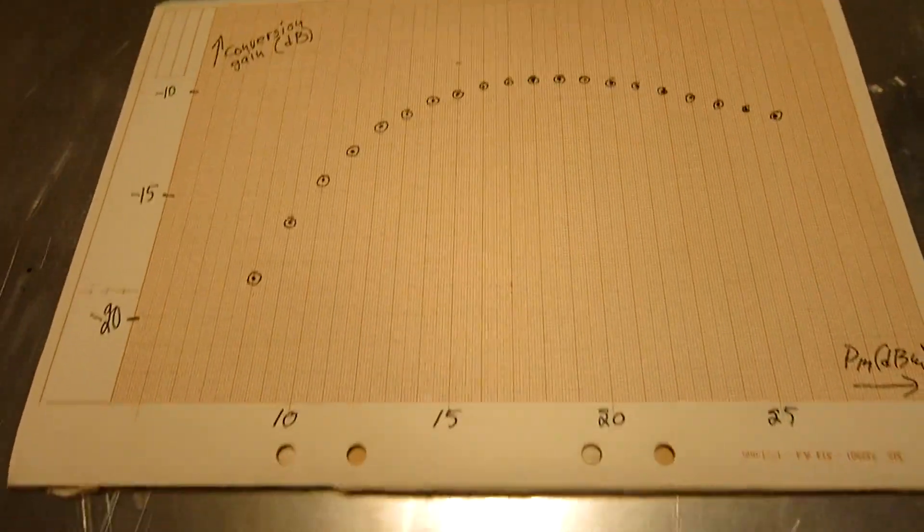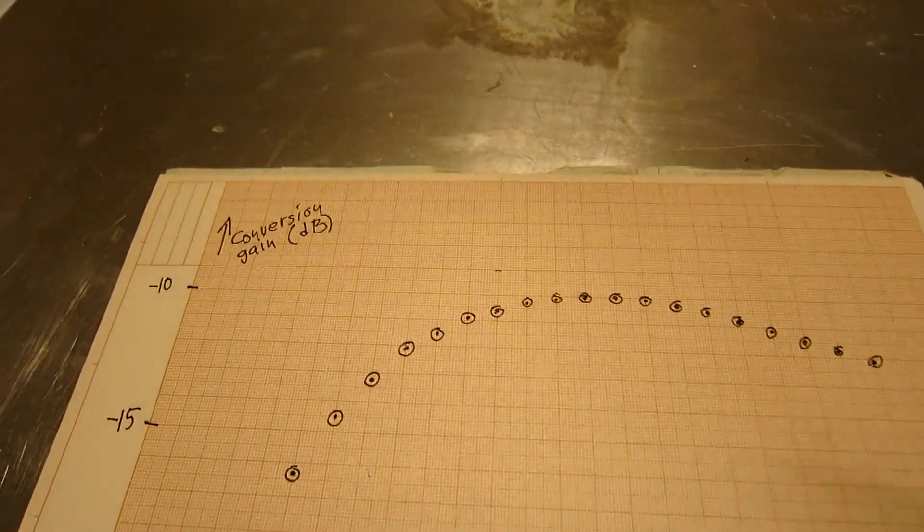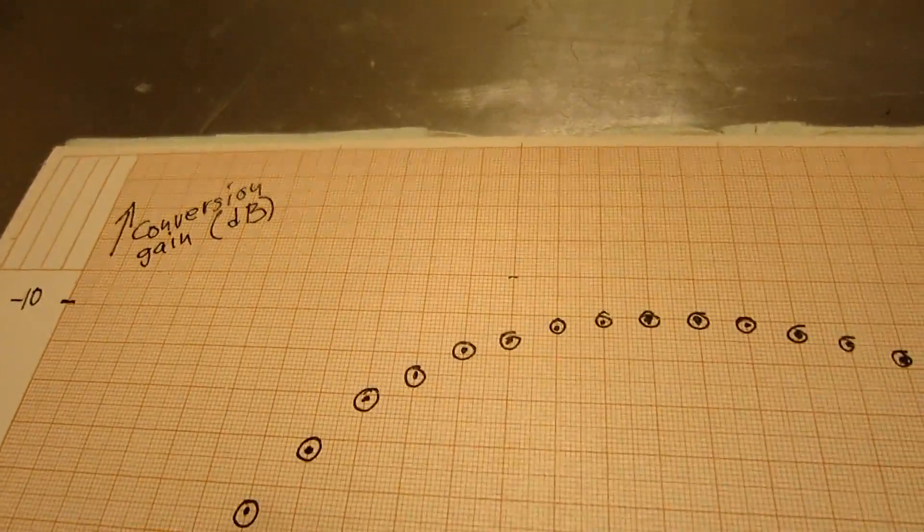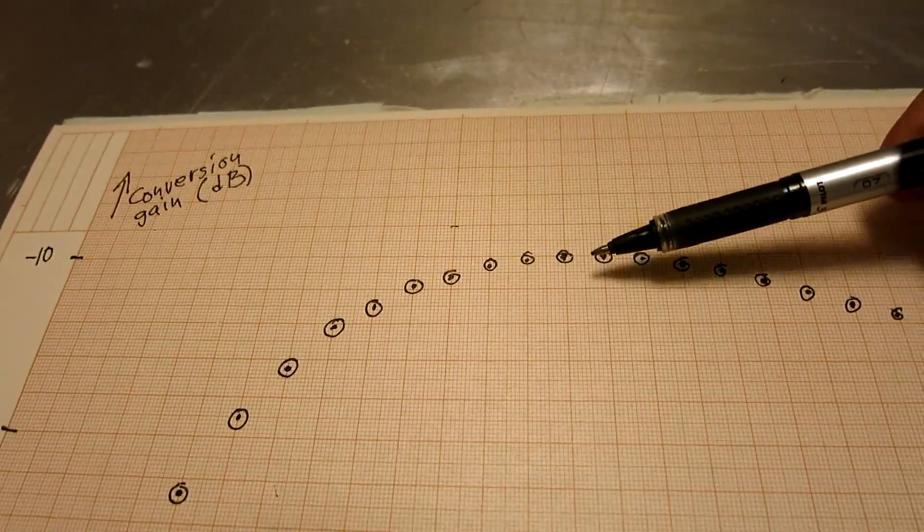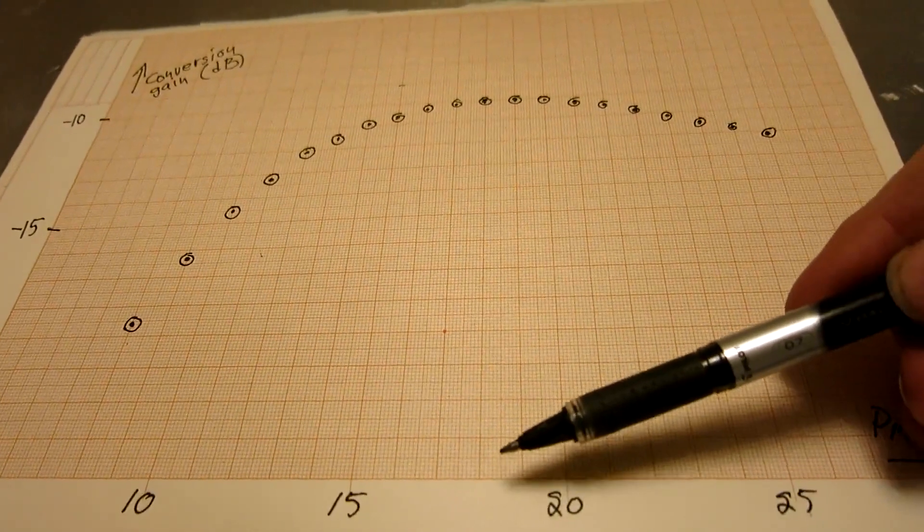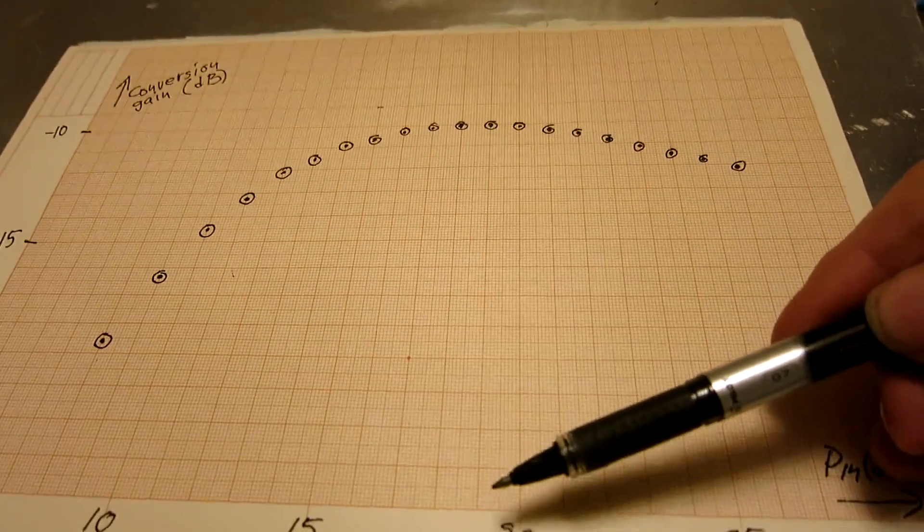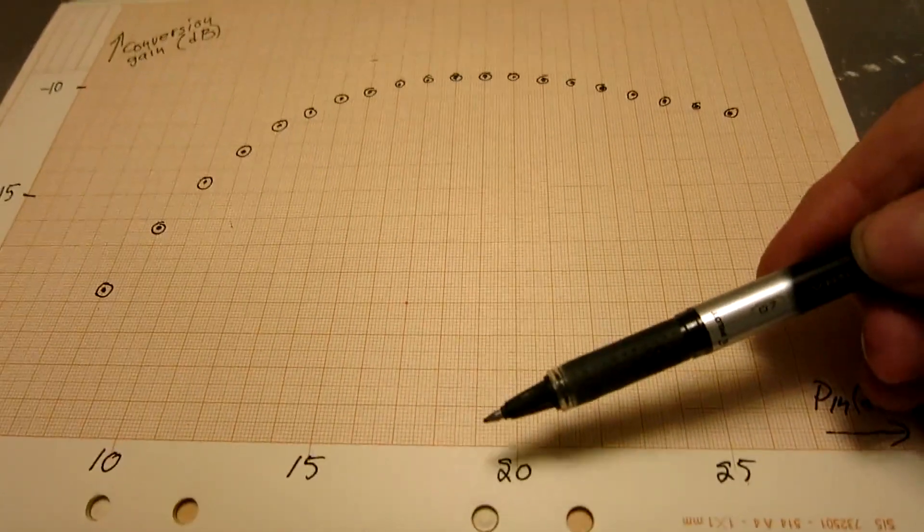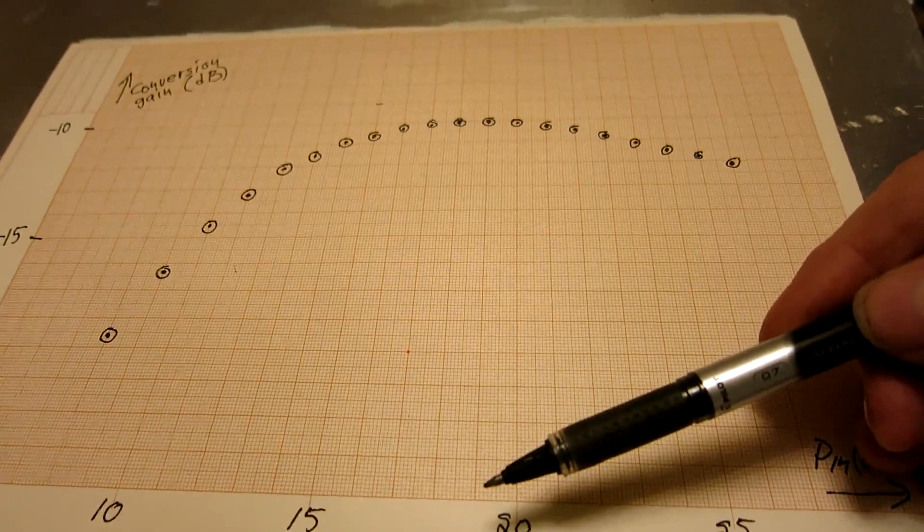It looks like this. So what you have here is the conversion gain. It's minus 10 dB here. That's at the power level of about 18 or 19 dBm. That's 4 dB below the rated level of the mixer.